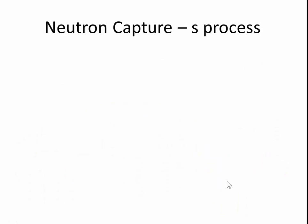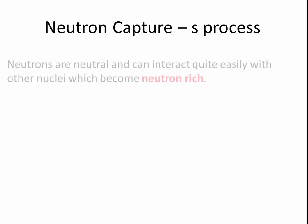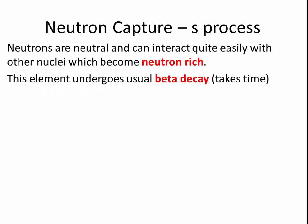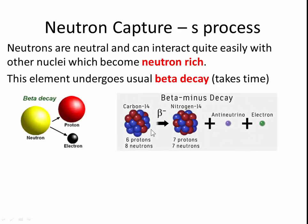Now you need to know the difference between the different kinds of neutron capture. S-process first of all - s stands for slow. Neutrons, which are neutral, can interact quite easily with other nuclei which become neutron rich because they've managed to absorb a neutron. So it's the same element, different isotope, because it has another neutron. Then what usually happens because it's neutron rich, it will try to decay via beta decay. As you know, beta decay, the neutron will decay into a proton and an electron. An example would be this: carbon-14 decays into nitrogen-14.